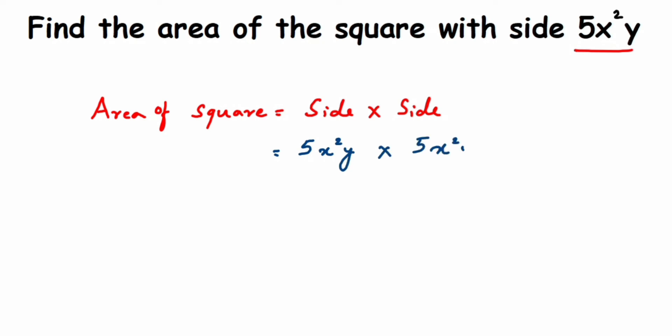I'm going to multiply first 5 and 5 because they're the numbers, so 5 times 5 is 25. Now multiply the same variables.